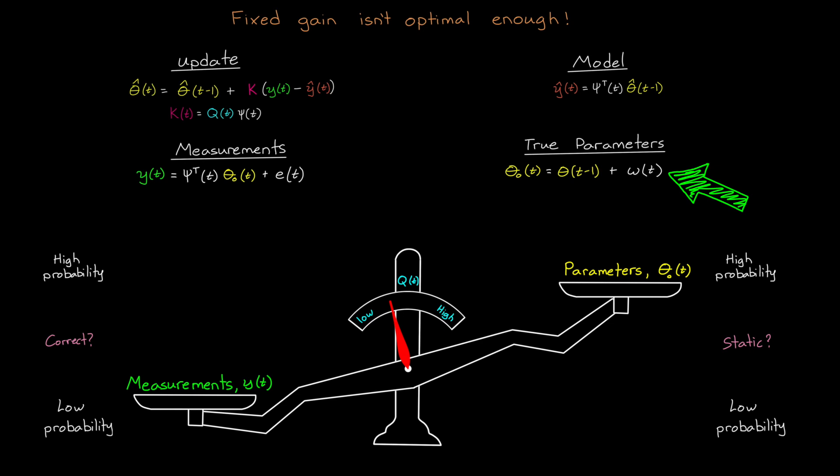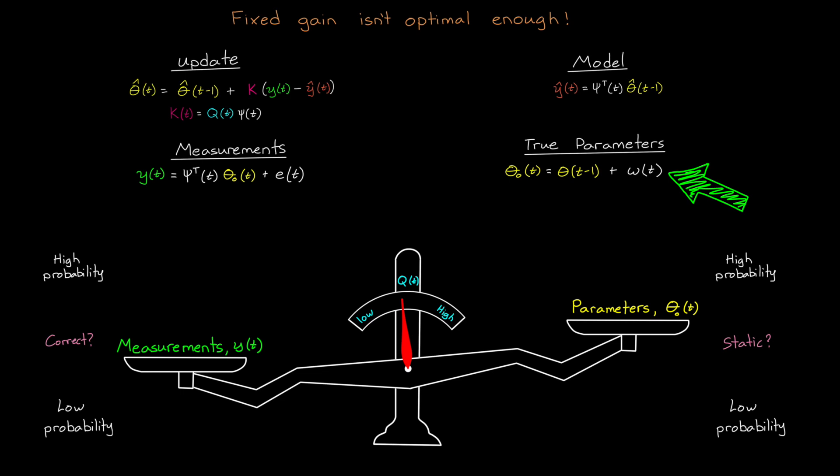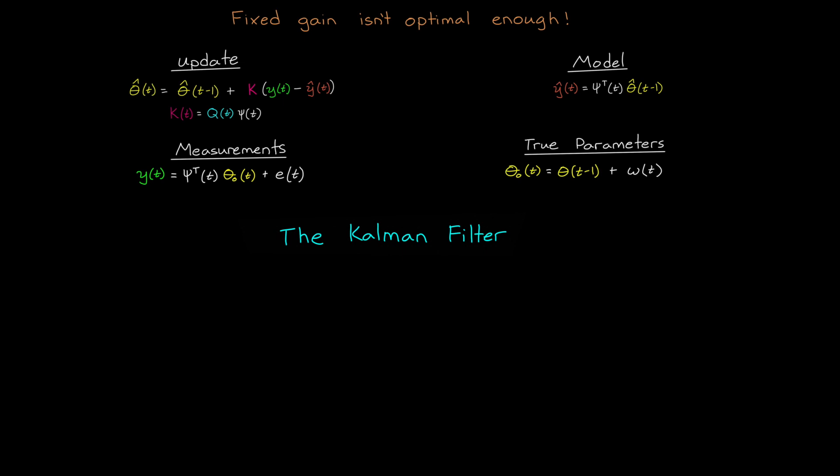Yet, if we know that the parameters in the system can move quite a bit each sample time, then maybe that large difference between the measurement and the prediction can be trusted more, and we want a Q value somewhere in the middle. This problem of trying to balance two uncertain elements is starting to look a lot like what a Kalman filter does, right?